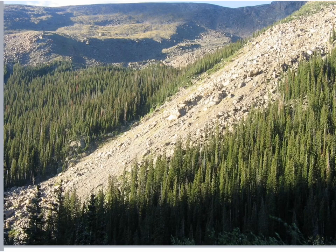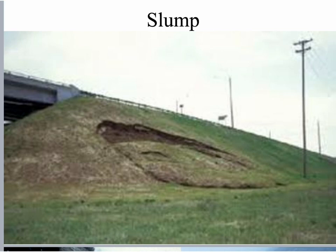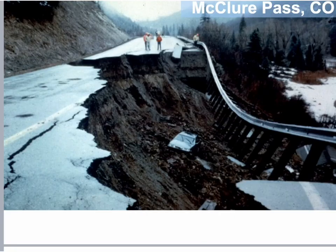Here's another example of a landslide — much more rocky, but all that material slid down a hill. And here's a slump: a chunk of land just slumps down — like Jenga, it's not being supported at the bottom. Sure enough, this whole section wasn't being supported and it just dropped down in one swift motion.